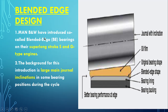MAN B&W introduced the blended edge design on the super long stroke S-type and G-type engines. The background for this introduction is the large main journal inclination occurring at some bearing positions during the cycle. It was introduced because of this journal inclination in the bearing cycle.